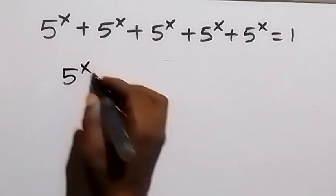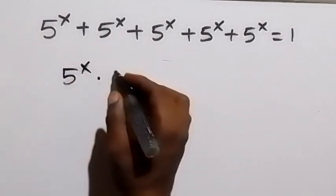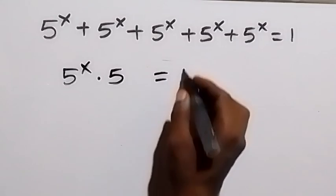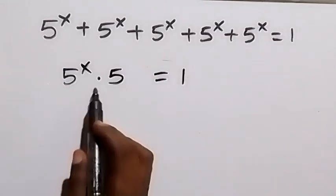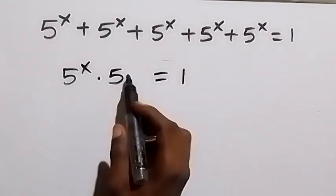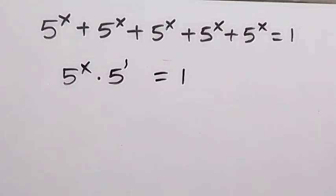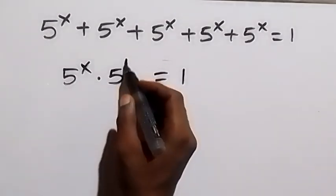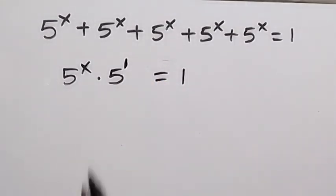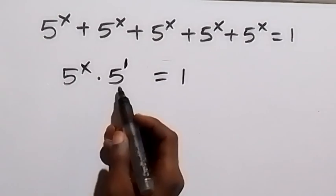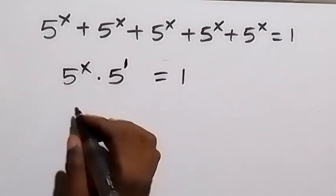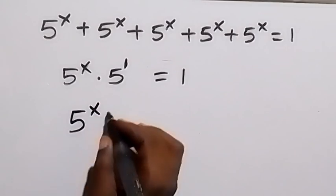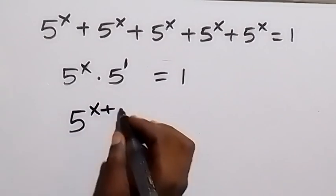And then 5 raised to power x — here we have 5 raised to power 1 — and when we apply the law of indices with the same base multiplied, we can add the powers. Then we have 5 raised to power x plus 1.